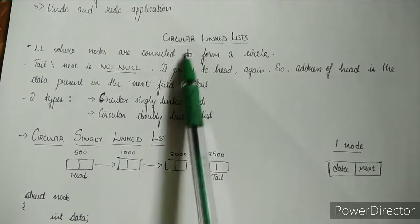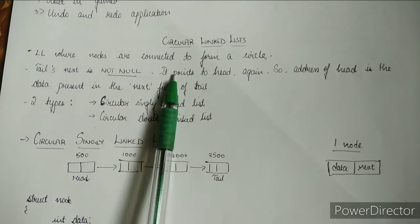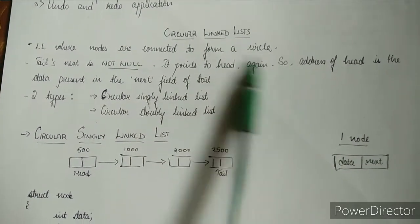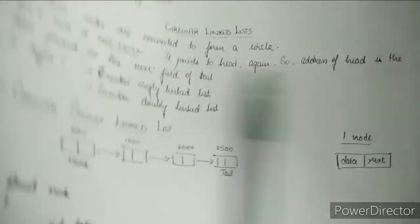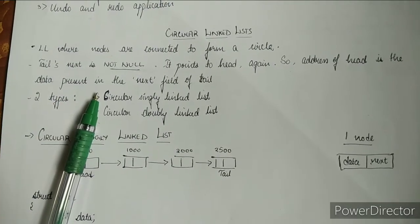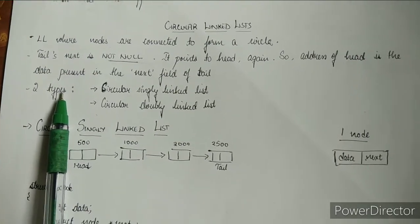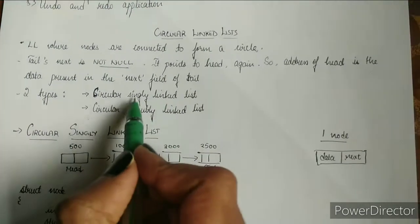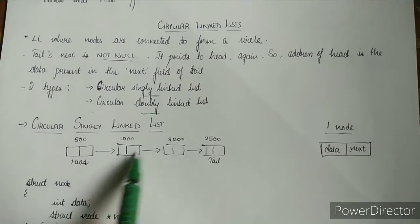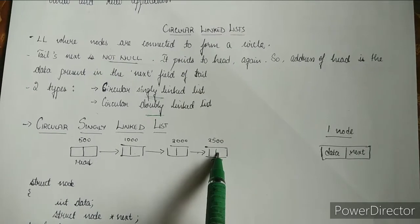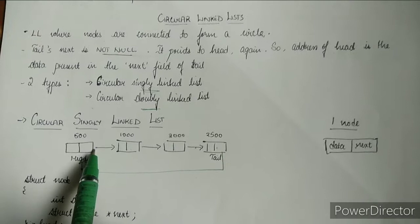In this video let's discuss circular linked lists — a linked list where nodes are connected to form a circle. The tail's next pointer is not null; it points back to head. The address of head is stored in the next field of the tail. There are two types: circular singly linked list and circular doubly linked list.